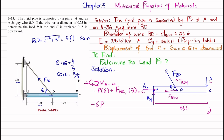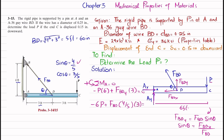The horizontal component does not produce a moment since it passes through A. FBD_y = FBD × sin θ = FBD × (4/5). Setting up the equation: −6P + FBD × (4/5) × 3 = 0. Solving gives FBD = 2.50P. This is Equation 1.